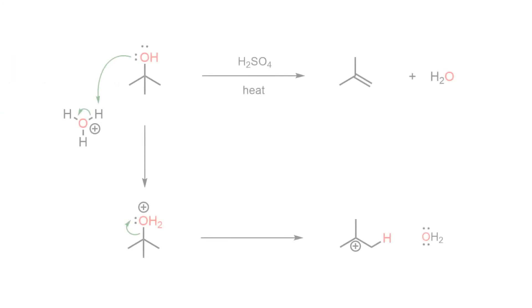The endothermic rate determining step follows in which the water leaving group breaks away from the alkoxonium species to produce the tertiary carbocation. Since this slow step only involves the collapse of the protonated alcohol, it is therefore unimolecular.